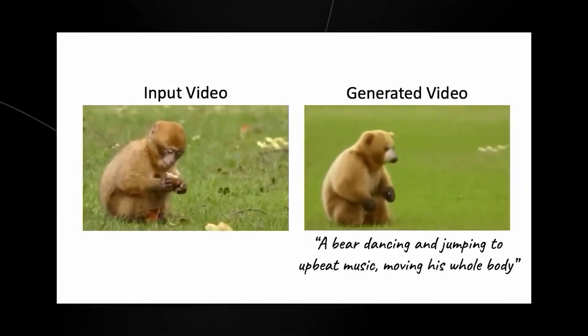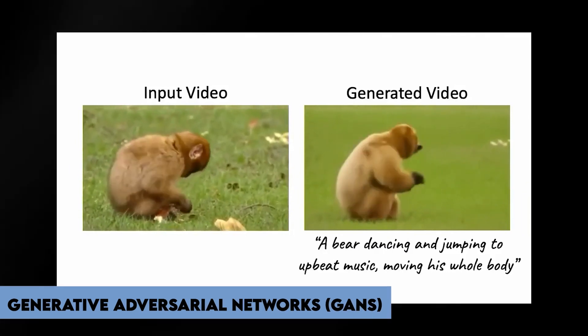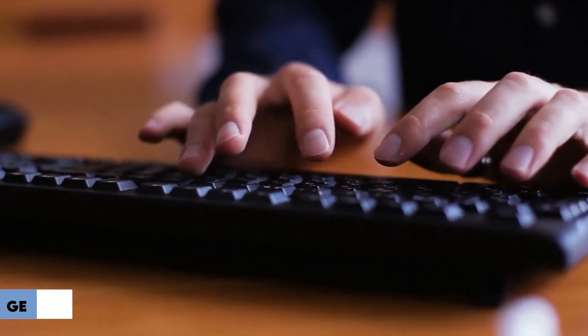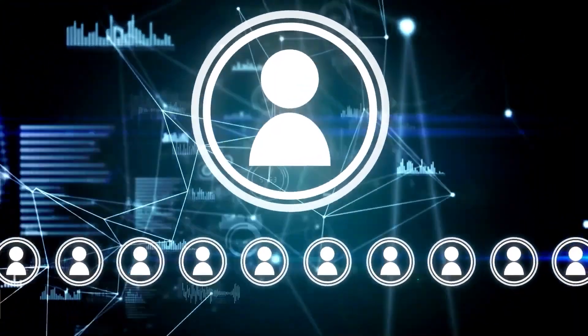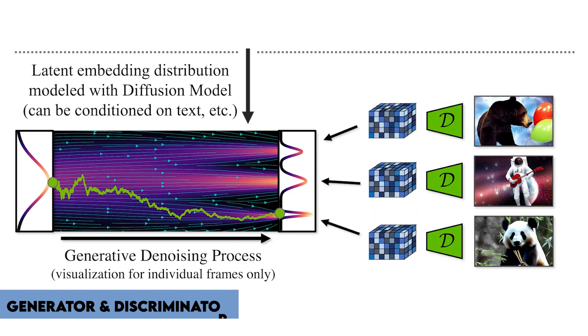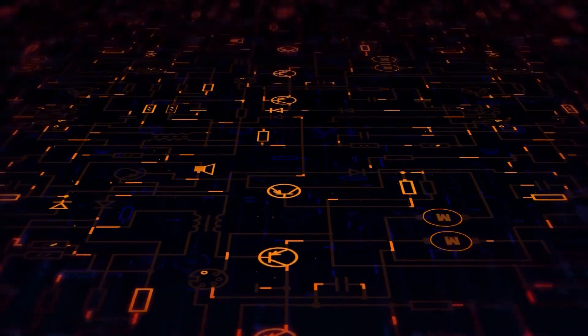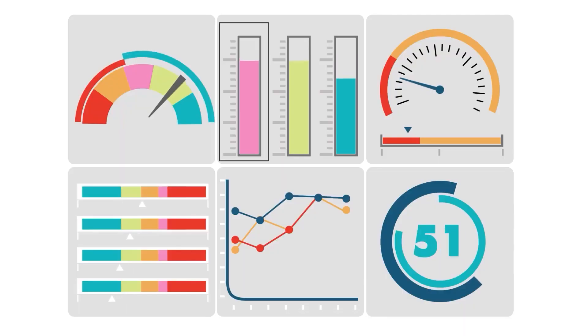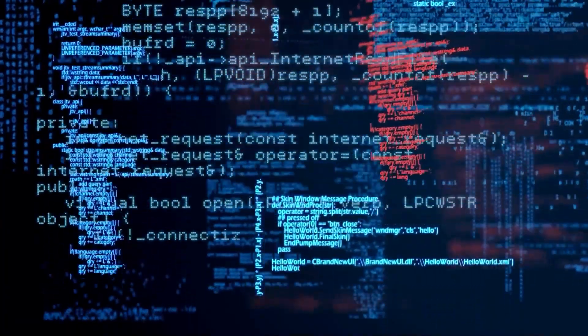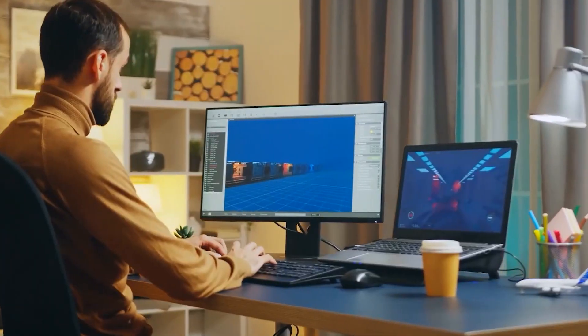The core concept behind text-to-video lies in its utilization of generative adversarial networks, a deep learning framework. GANs consist of two neural networks: a generator and a discriminator. The generator network takes the text input and generates a sequence of images corresponding to the given description. Simultaneously, the discriminator network evaluates the generated video frames, providing feedback to the generator to enhance quality and authenticity.